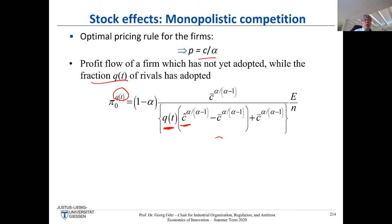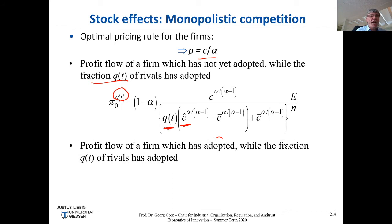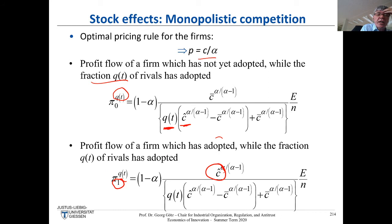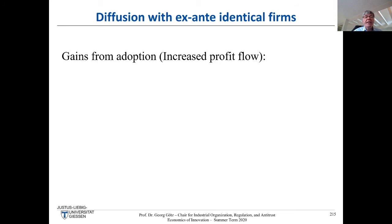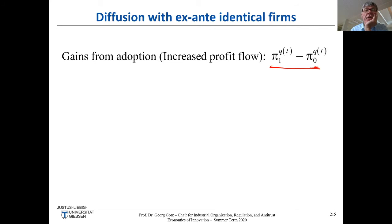The same holds when you've already adopted: the more rivals have adopted, the lower your profit. What is the gain from adoption? It's the increased profit flow from π₀ to π₁ — but this depends on q. We get the same key assumption as Reinganum: if q is zero (I'm the first adopter), my profit gain is much higher than if q equals one (everyone has already adopted). This is decreasing in q.